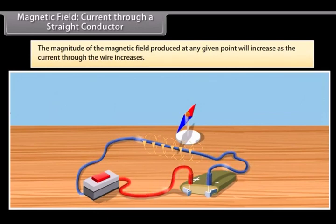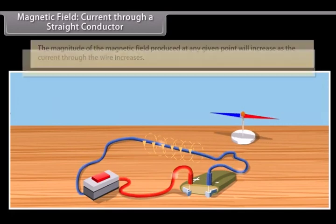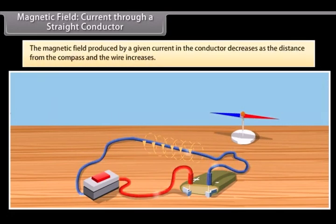Now, try moving the compass away from the current passing through the wire. You will see that the magnetic field produced by a given current in the conductor decreases as the distance from the compass and the wire increases.